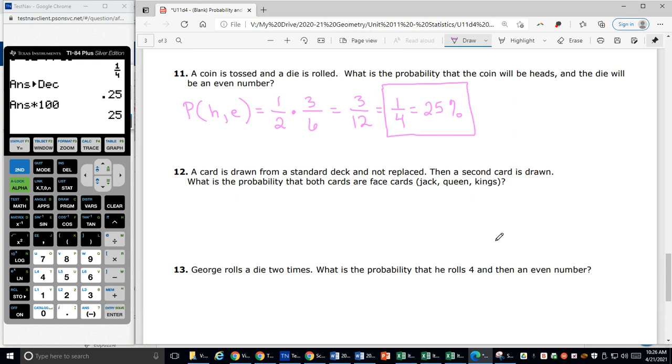All right, number 12. A card is drawn from a standard deck and not replaced. So that's super important to note, not replaced. Then a second card is drawn. What is the probability that both cards are face cards? So let's think about this. I want the probability that I'm going to draw a face card and then another face card.